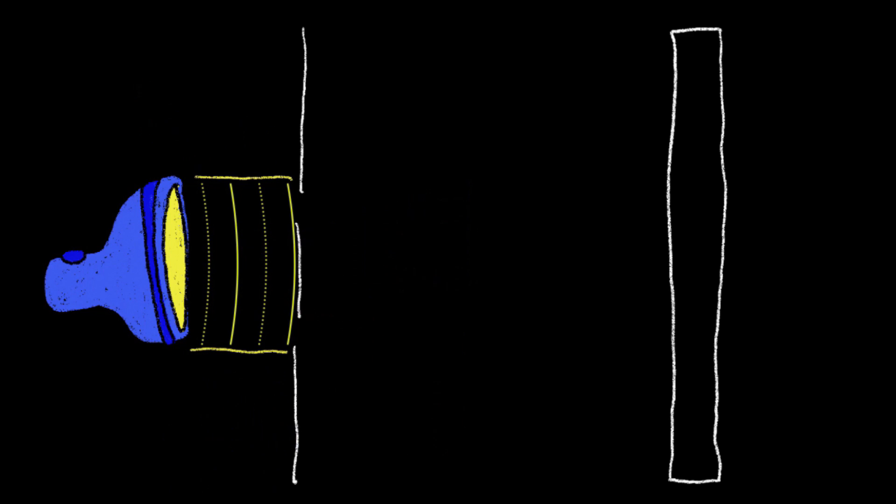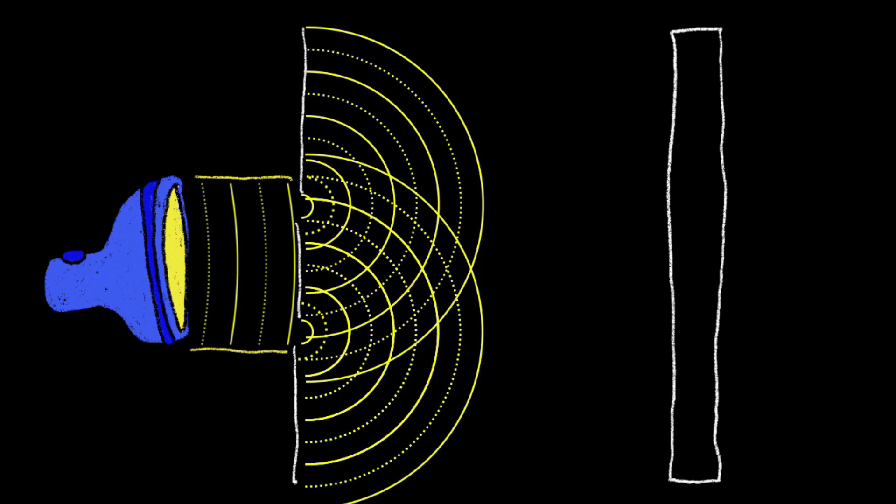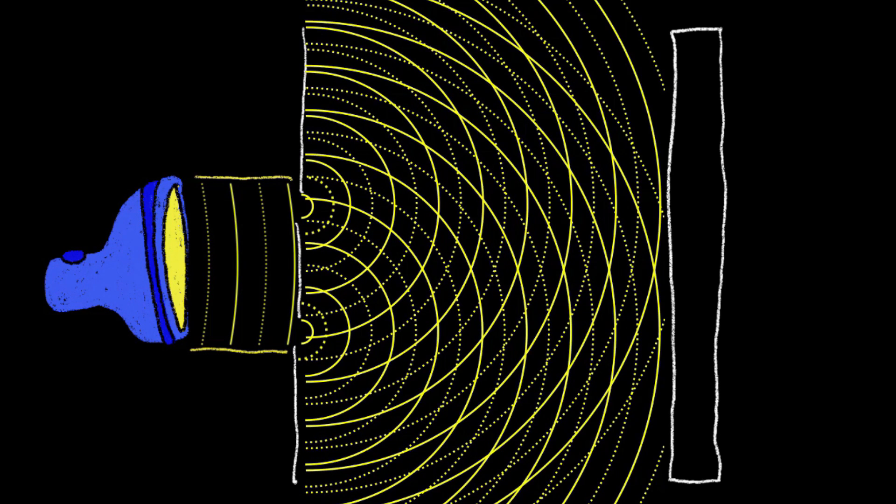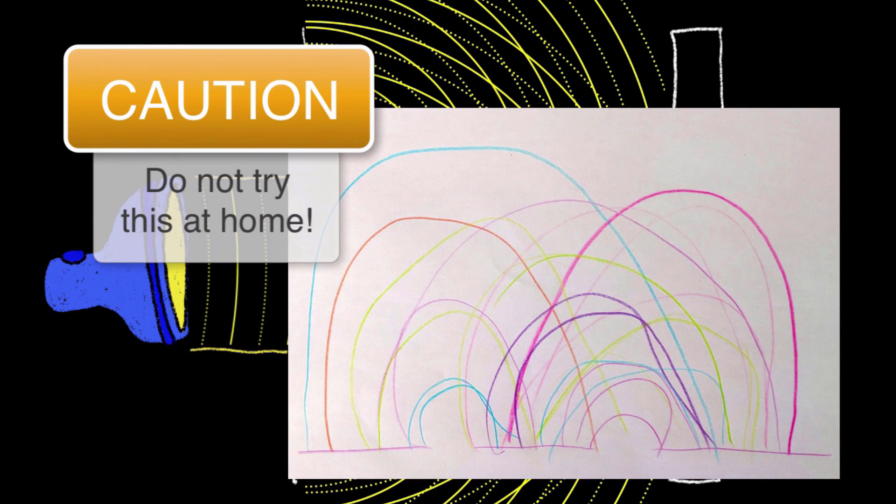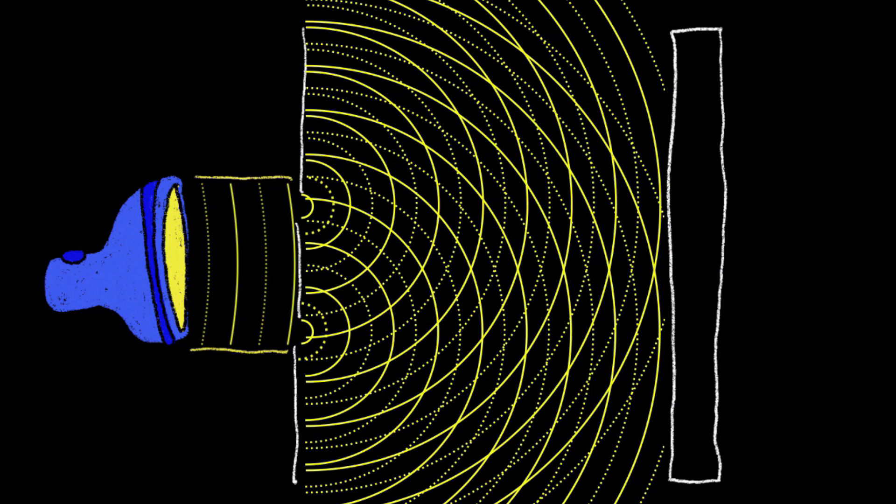So we have waves emanating from the source. Now when the wavefronts come into contact with the slits, because of wave diffraction, the waves diffract around the slits, forming cylindrical waves. Now these cylindrical waves continue moving forward until they reach the detection plane. So now we have two sets of cylindrical waves, and because they came from the same source, they have the same amplitude, same frequency, same wavelength.